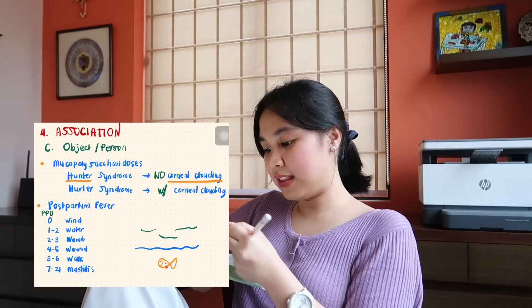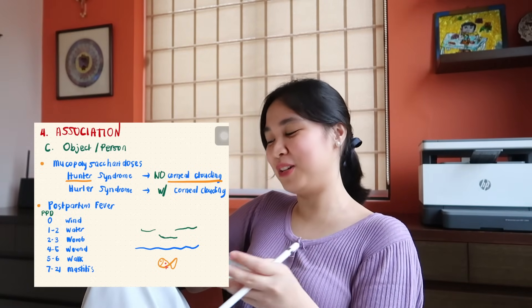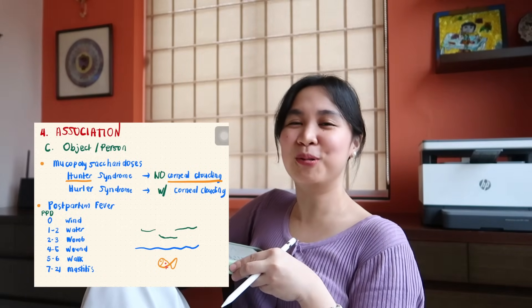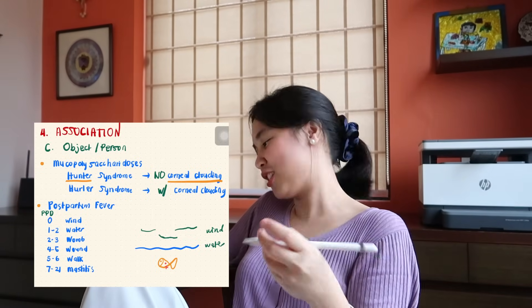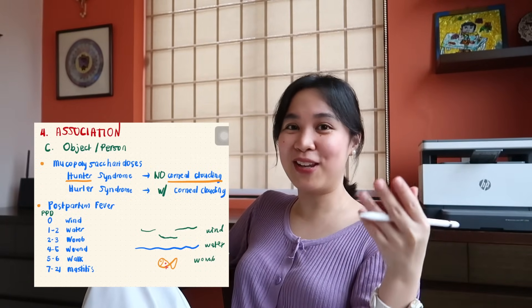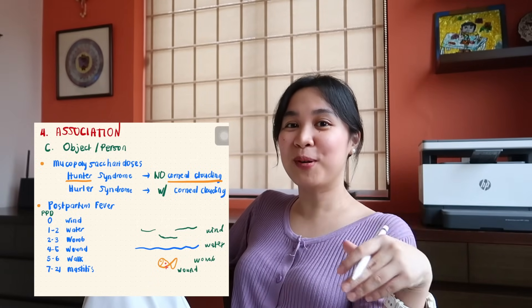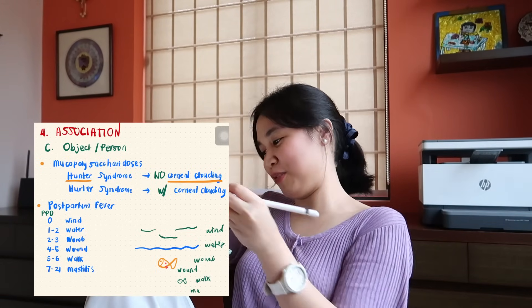Another example is causes of postpartum fever organized by postpartum day — the days are divisible by one, making them easy to remember. I made a story called 'The Fish in the Womb': first is Wind for atelectasis, then Water below the sea breeze, then the Fish with a Womb inside containing a baby that needs a Wound to come out, then the baby can Walk — or swim — on its own, and lastly Mastitis because now it's time to breastfeed. That's how I remember causes of postpartum fever day by day.